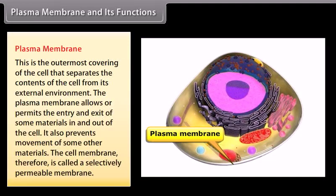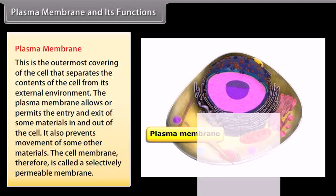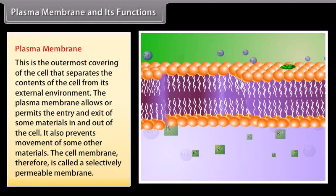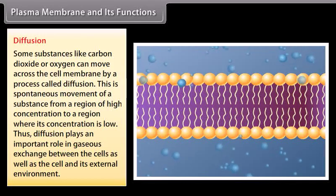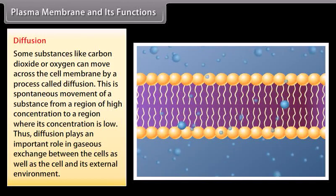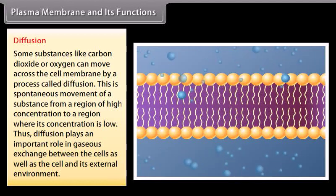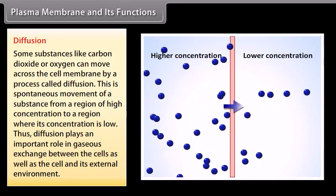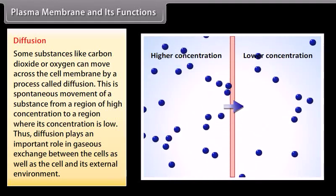The plasma membrane is the outermost covering of the cell that separates the contents of the cell from its external environment. The plasma membrane allows or permits the entry or exit of some materials in and out of the cell and prevents movement of some other materials — it is therefore called a selectively permeable membrane. Some substances like carbon dioxide or oxygen can move across the cell membrane by a process called diffusion, which is the spontaneous movement of a substance from a region of high concentration to a region of low concentration. Diffusion plays an important role in gaseous exchange between cells and their external environment.